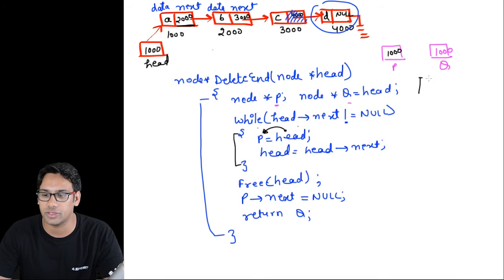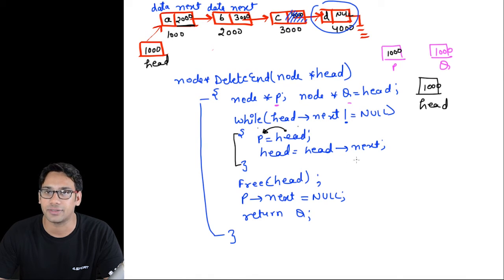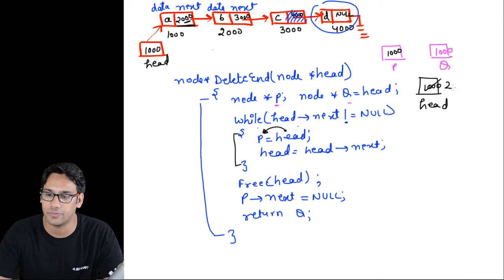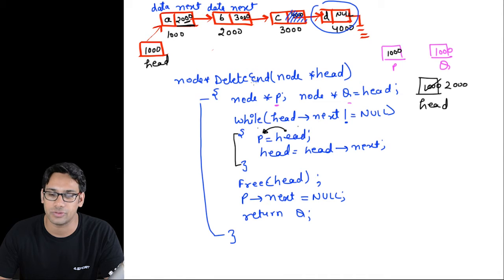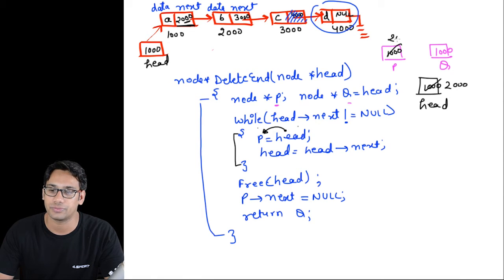Initially head was storing 1000. After p = head, p stores 1000. Then head = head->next, so head now points to node at address 2000, because the next part of the first node stores 2000. We go back to the while loop — head is now at 2000, and the next part at 2000 stores 3000, which is not null. So the condition is true again. p = head, so p stores 2000.